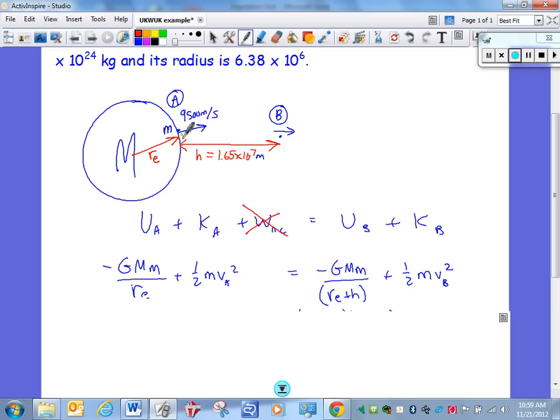On the other side, we have gravitational potential energy. Notice that my denominator here is the radius of the Earth plus the height. Because once again, we're looking for the distance between the center of the projectile and the center of the Earth. So you have to add the radius of the Earth to the height. Always be careful about that when you read a problem. And then we have the kinetic energy of the projectile at point B.